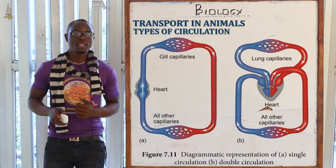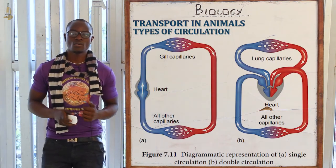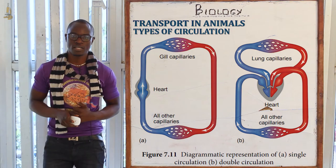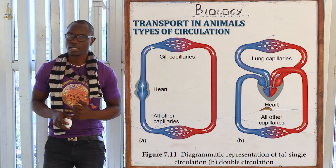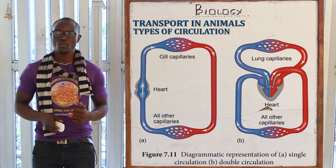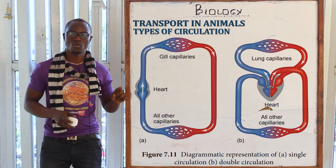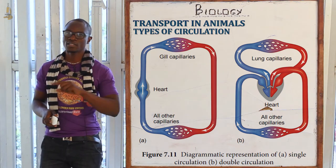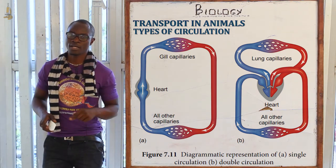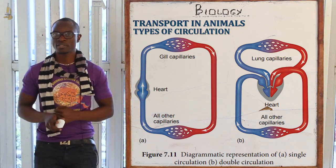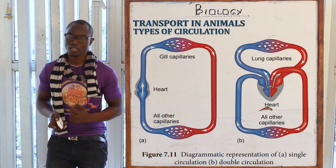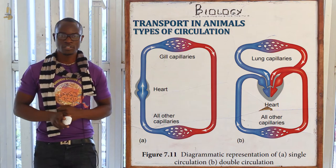When blood passes through the heart only once before going to the rest of the body, this type of circulation is called single circulation. An example is the fish, where blood passes once through the heart, travels to the rest of the body, and then returns to pass through the heart once again.